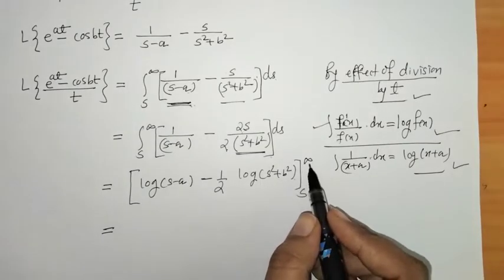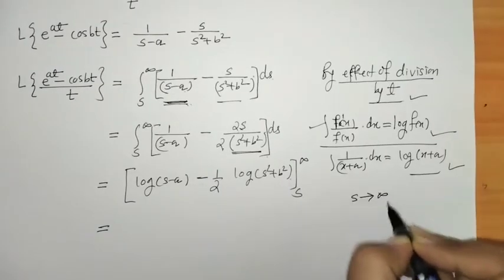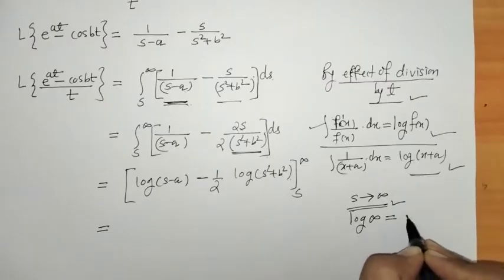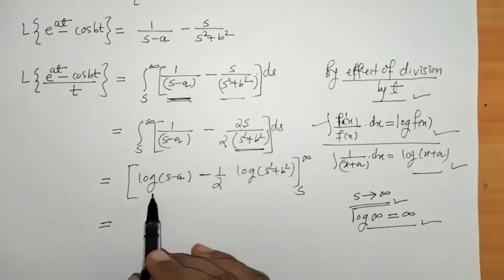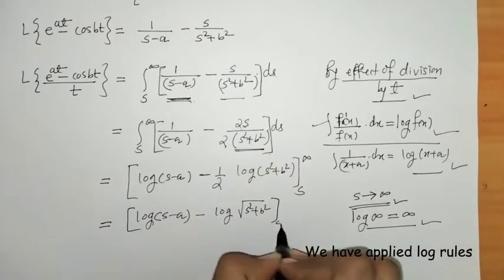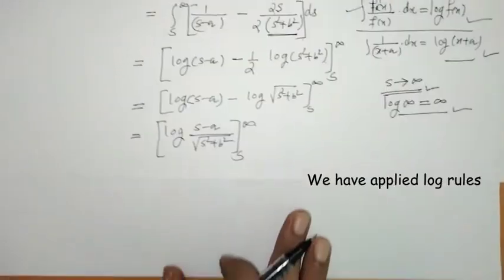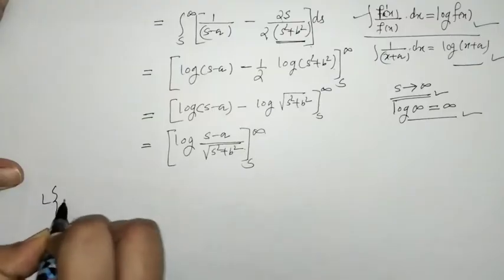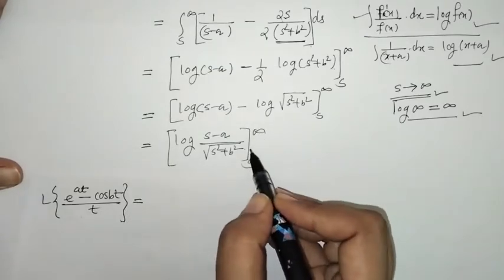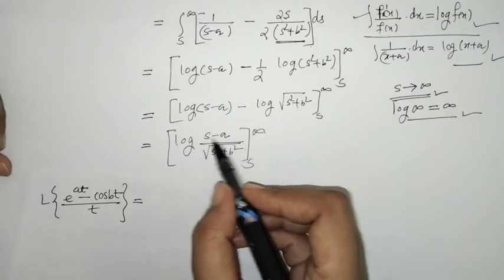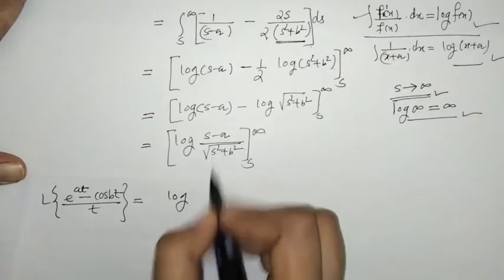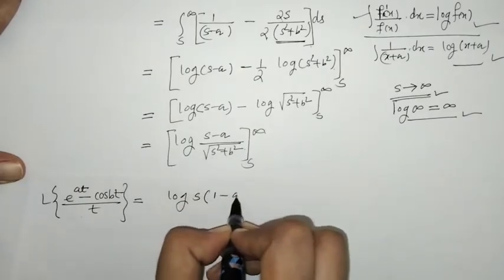Now we have to put in the limits. When we put s equals infinity, we get log of infinity, and log of infinity is infinity — so we get an undefined result. To get a finite Laplace transform, we need to do some adjustment. We take s common from the expressions so that the terms become manageable.